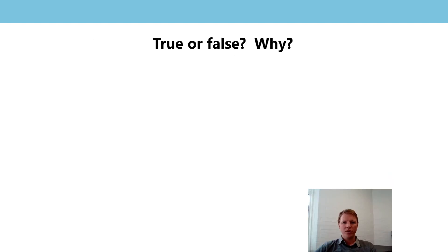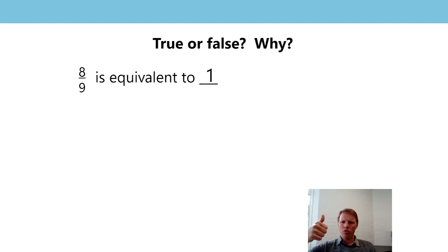So some true or false statements for us to think about that build on that generalisation. For each one, I want you to identify if you think it's true or false, but also think why. The first question: 8 ninths is equivalent to 1 - true or false? Show me with your thumbs. That is false. Why is it false? The numerator is 8, the denominator is 9, so they are not the same - so that fraction is not equivalent to 1.